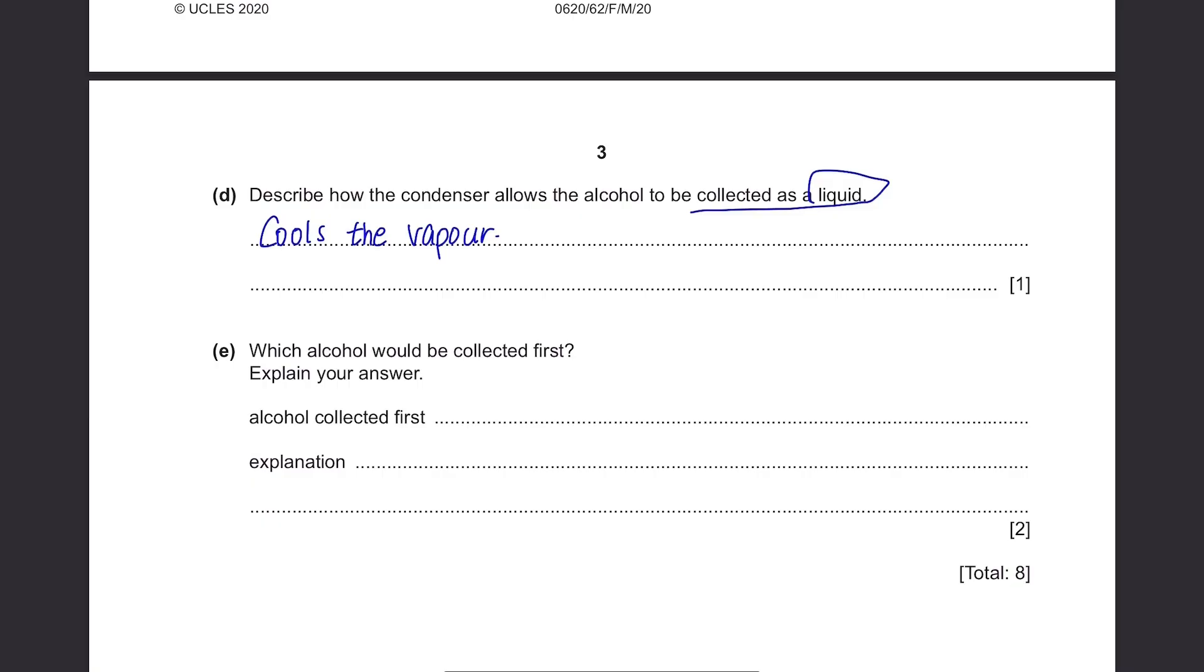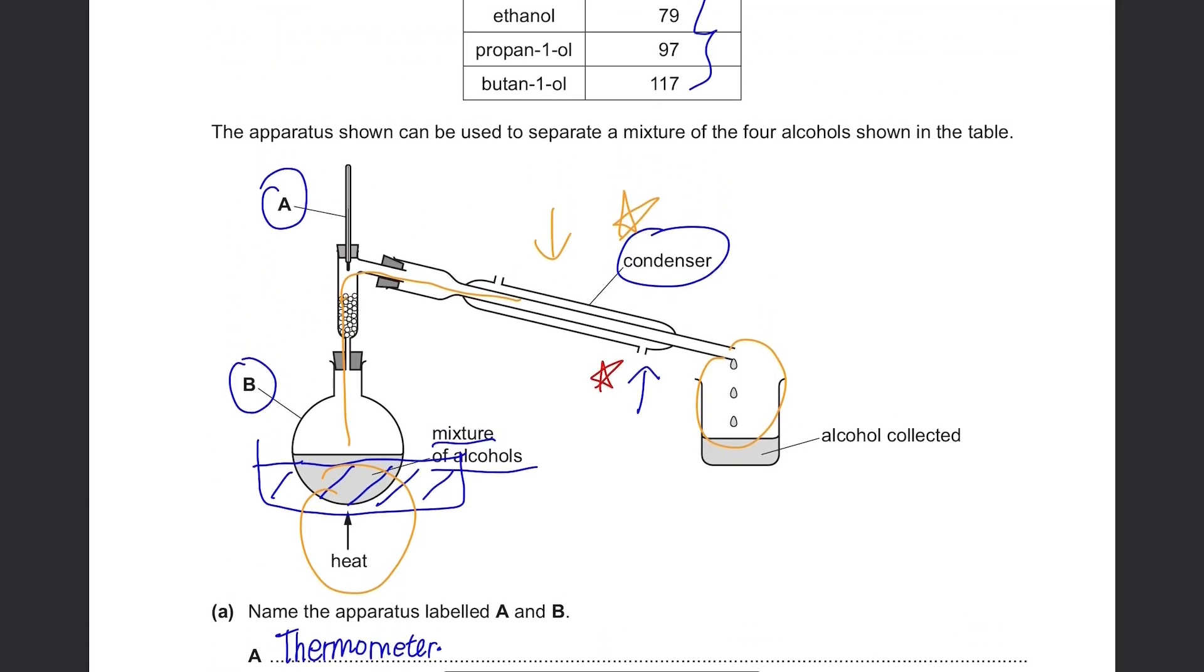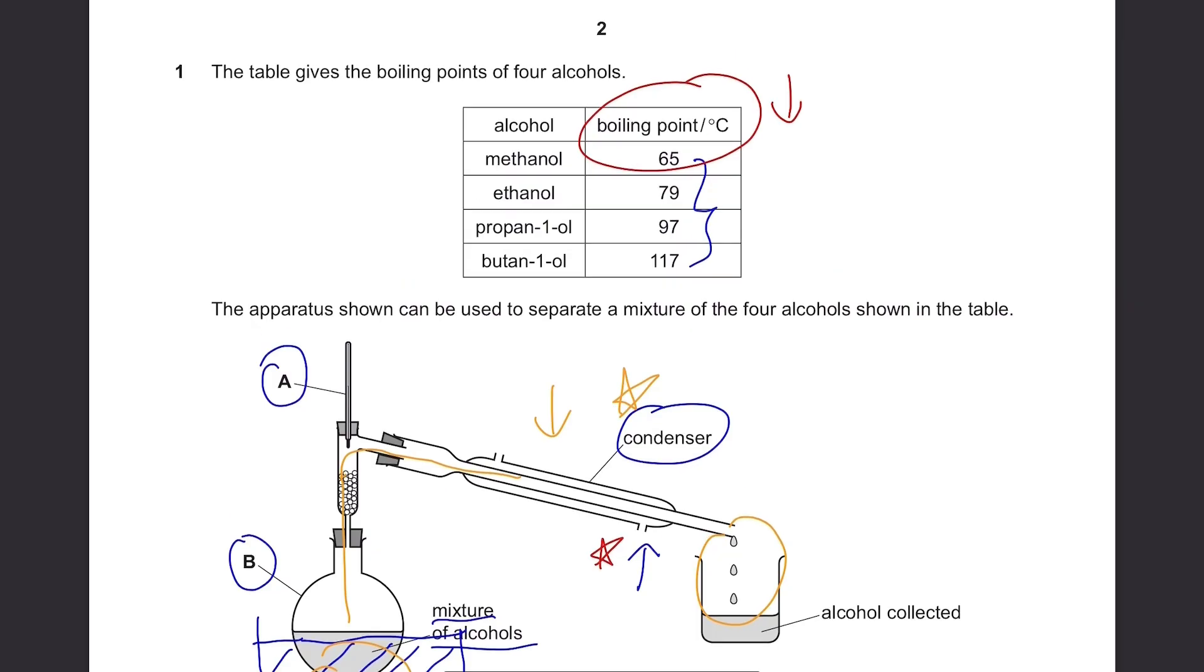Part E, which alcohol will be collected first? Explain your answer. This fractional distillation works because these alcohols are all in different boiling points. And if your boiling point is lower, it's gonna start boiling faster than the rest of the alcohols and will be collected first. So the answer is methanol because its boiling point is the lowest.